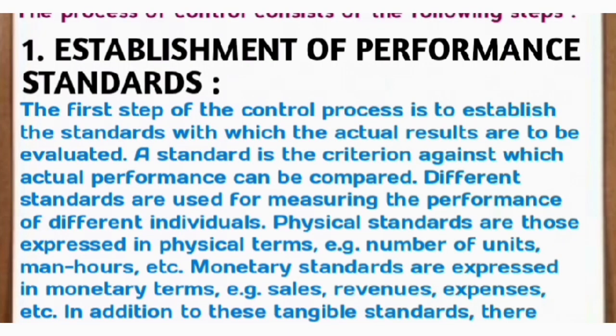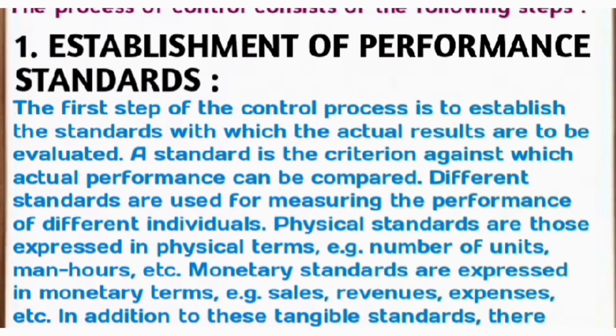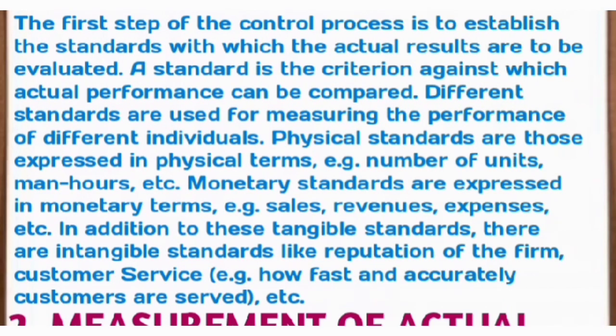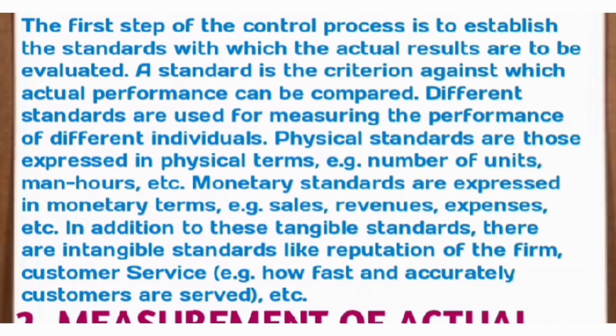Step 1: Establishment of Performance Standards. The first step of the control process is to establish standards against which actual results are to be evaluated. A standard is the criterion against which actual performance can be compared. Different standards are used for measuring the performance of different individuals.